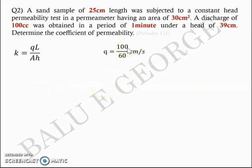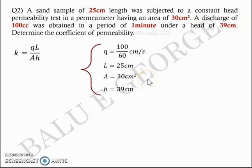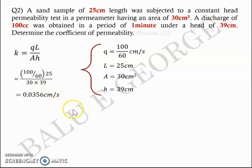100 cc in 1 minute equals 100 cc in 60 seconds, so the discharge Q is 100/60 cm³/s. The length of flow L is 25 cm. The cross-sectional area A is 30 cm², and the head H is 39 cm. Substituting with consistent units of cm and seconds: K = (100/60 × 25) / (30 × 39). The answer is approximately 0.0356 cm per second — that is the coefficient of permeability.